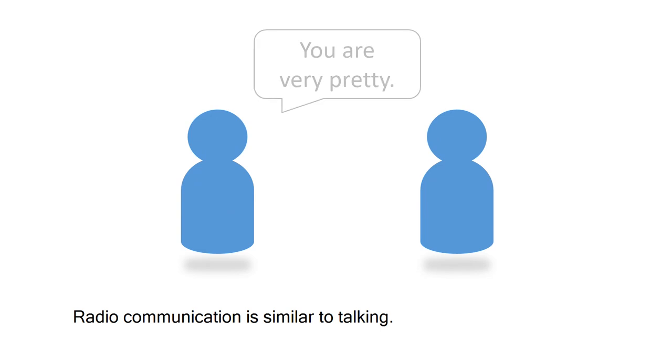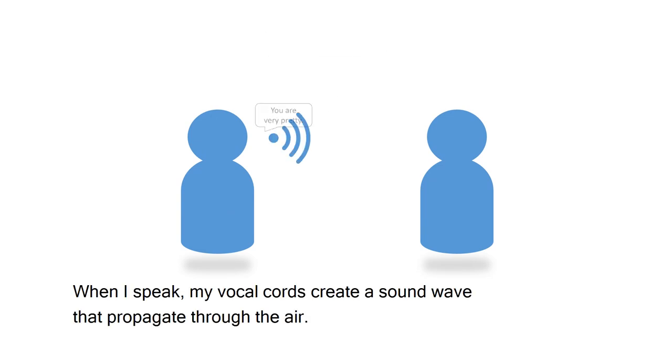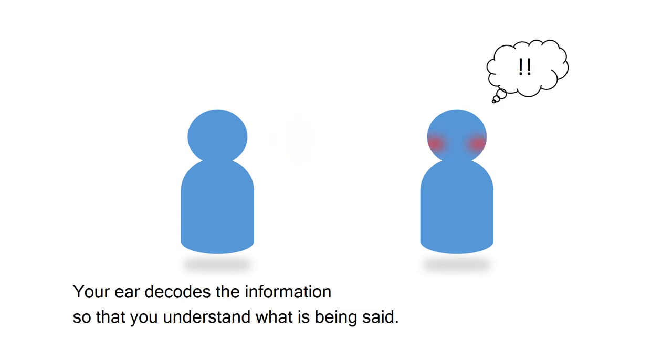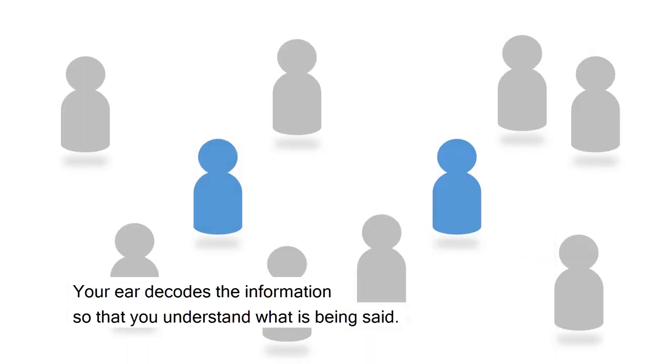Radio communication is similar to talking. When I speak, my vocal cords create a sound wave that propagates through the air. Your ear decodes the information so that you understand what's being said.